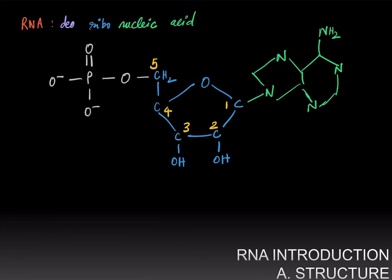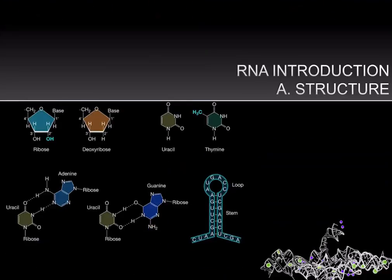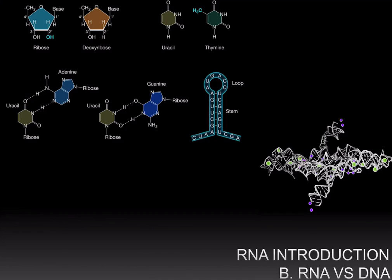DNA is deoxyribonucleic acid, which refers to the fact that there is no hydroxyl group on the second carbon. But RNA does have that second hydroxyl group and is therefore referred to as ribonucleic acid. Even though RNA and DNA are both nucleic acids, they have certain key differences. The first is that RNA has the ribose sugar in its backbone, whereas DNA uses the deoxyribose sugar that lacks the hydroxyl group on the second carbon.